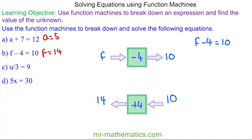Again we can check this works — we put 14 into our top machine: 14 take away 4, which does make 10.